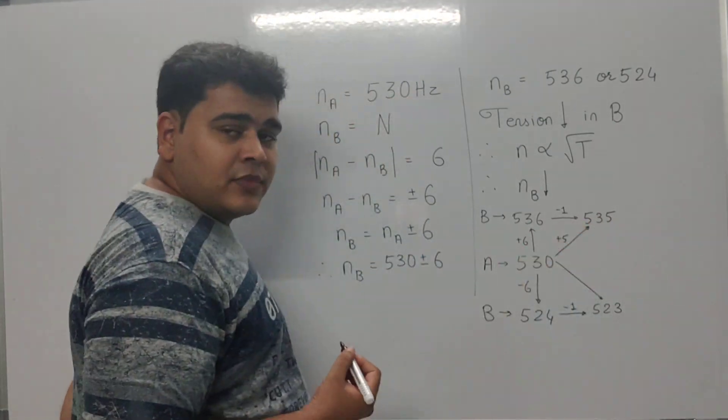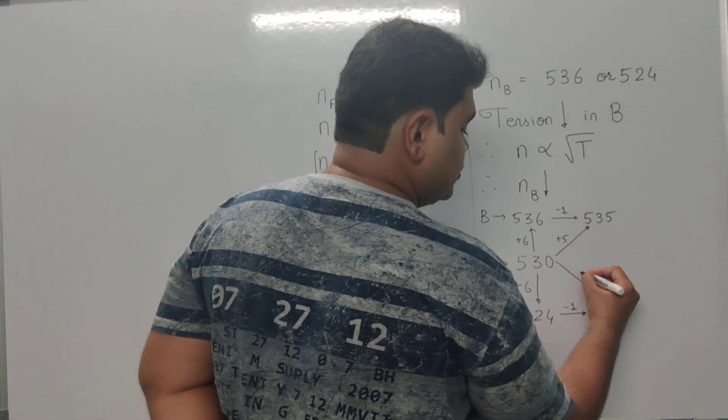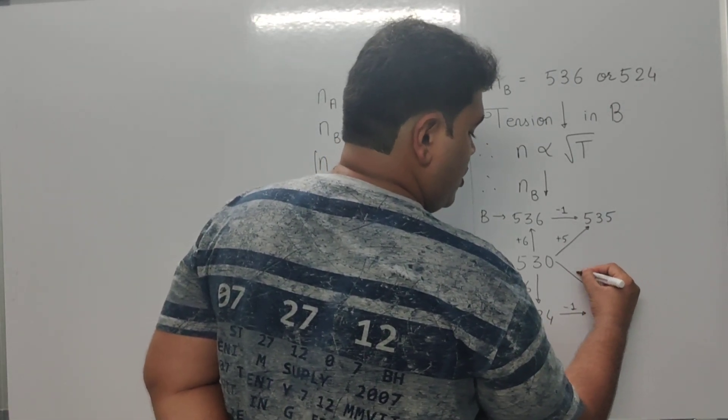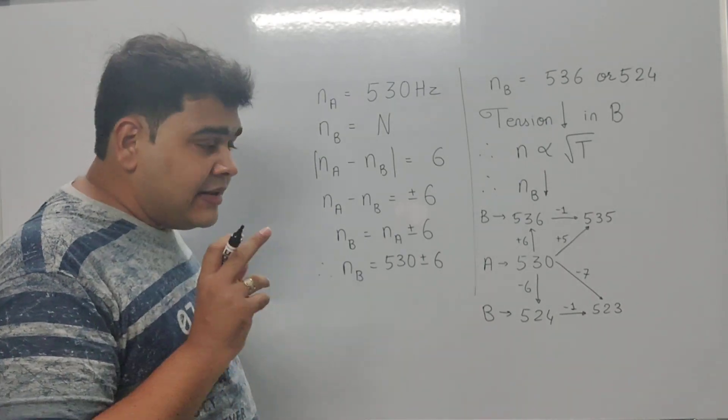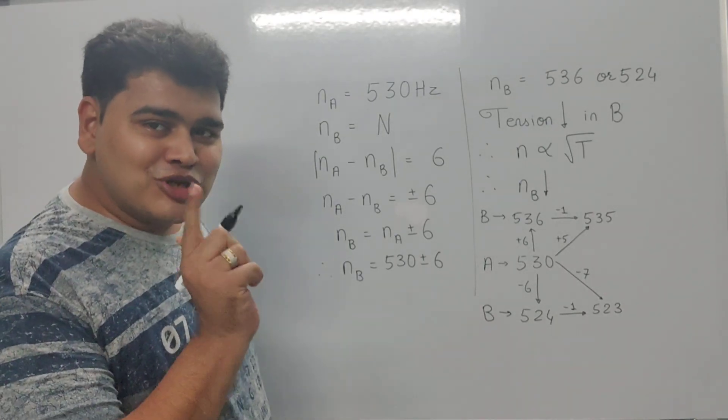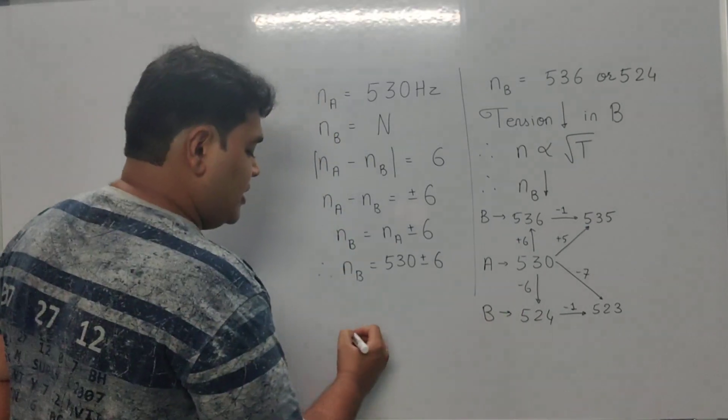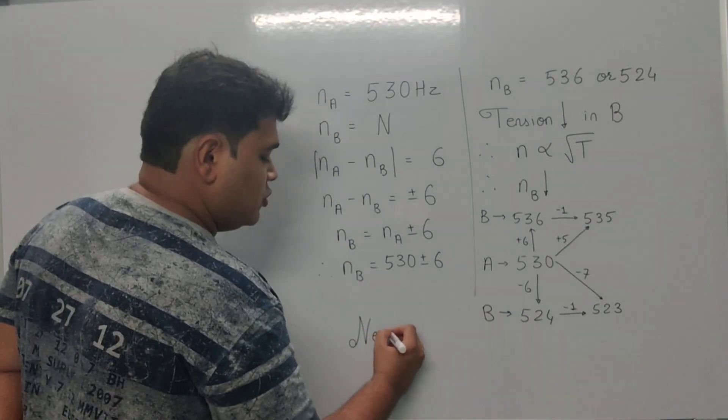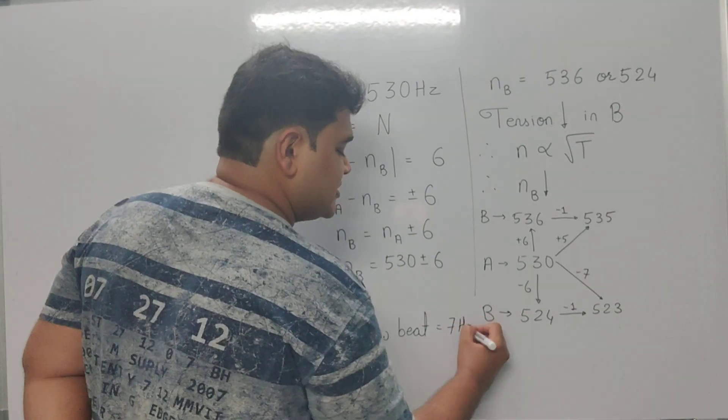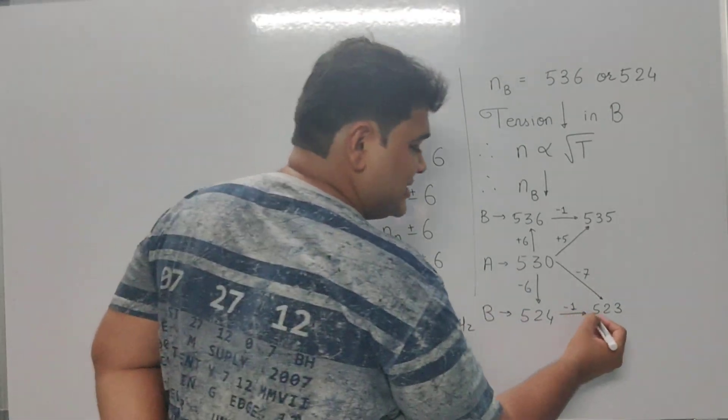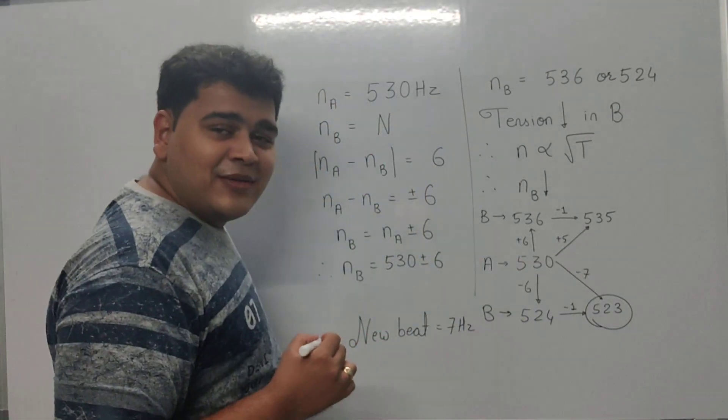Here the beat frequency has reduced to plus 5, and here the beat frequency has reduced to minus 7. Coincidentally, in the question itself they said the new beat frequency is 7 Hz, which means this is the case because that is where we are getting 7 Hz as a beat frequency.